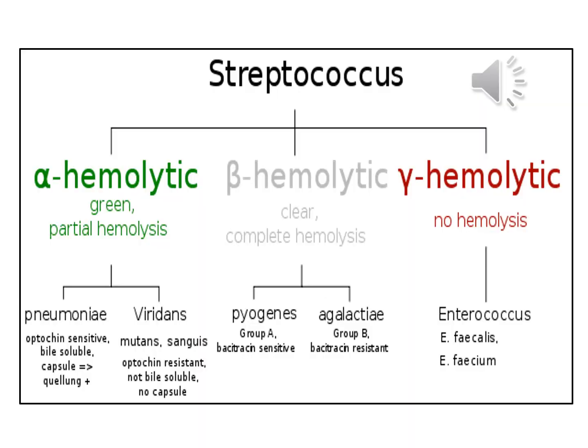Staphylococci are gram-positive aerobic organisms that cause many disorders including pharyngitis, pneumonia, wound and skin infections, sepsis, and endocarditis. Three types of Streptococcus are differentiated by their appearance on sheep blood agar: beta-hemolytic Streptococcus produces zones of clear hemolysis around each colony (e.g., Group A Streptococcus pyogenes and Group B Streptococcus agalactiae); alpha-hemolytic Streptococcus such as S. pneumoniae and S. viridans are surrounded by green discoloration from incomplete hemolysis; and gamma-hemolytic Streptococcus are non-hemolytic, such as Enterococcus species like Enterococcus faecalis.